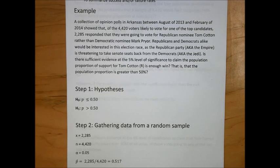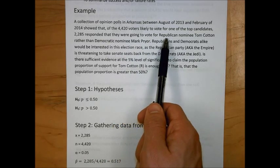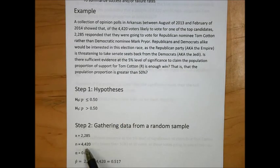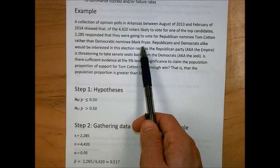In step 2, we gathered the relevant data from the sample in order to carry out the rest of the hypothesis test. In this case, we saw that 2,285 people were going to vote for Republican nominee Tom Cotton. This was out of a total of 4,420 people that were either going to vote for Tom Cotton or Mark Pryor.